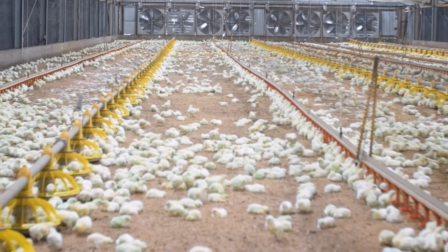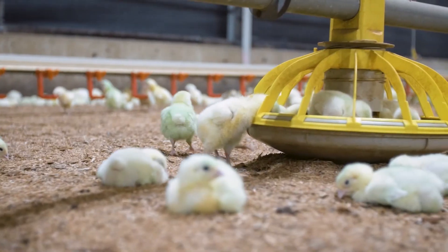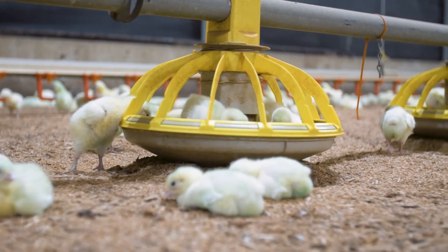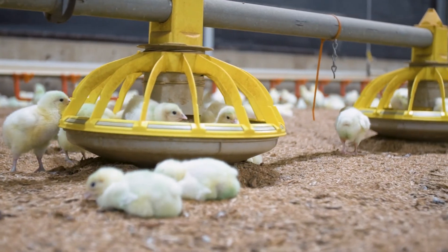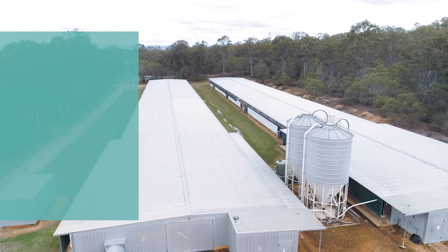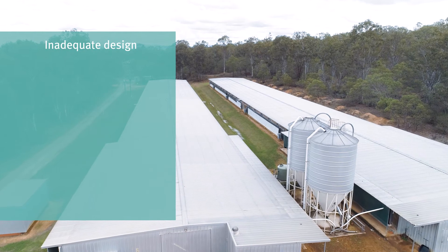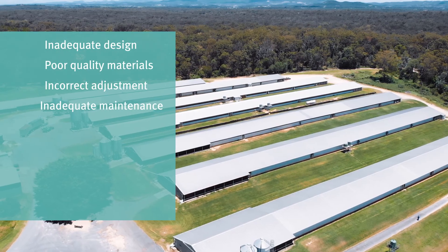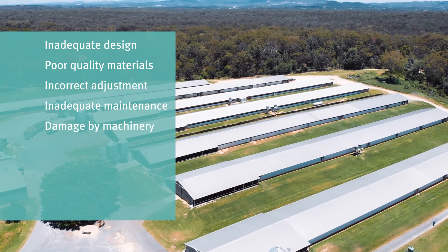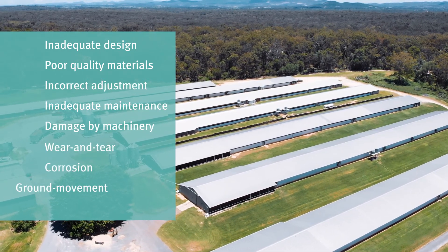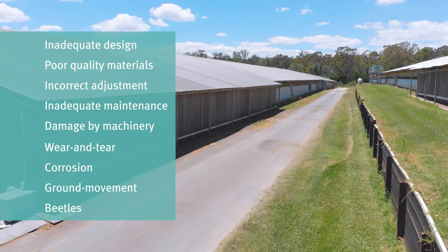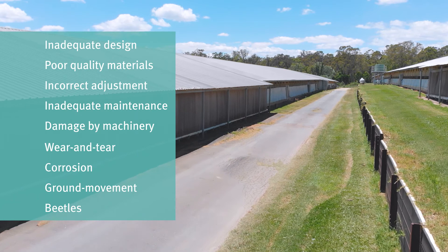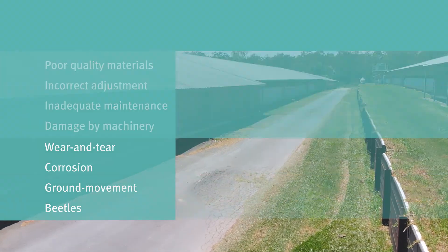Maintaining your shed with adequate insulation and minimal leakage will contribute towards a shed running efficiently and help keep the litter dry. Inadequate design, poor quality materials, incorrect adjustments, inadequate maintenance, damage by machinery, wear and tear, corrosion, ground movement, or beetles can result in higher operating costs and make litter management difficult.